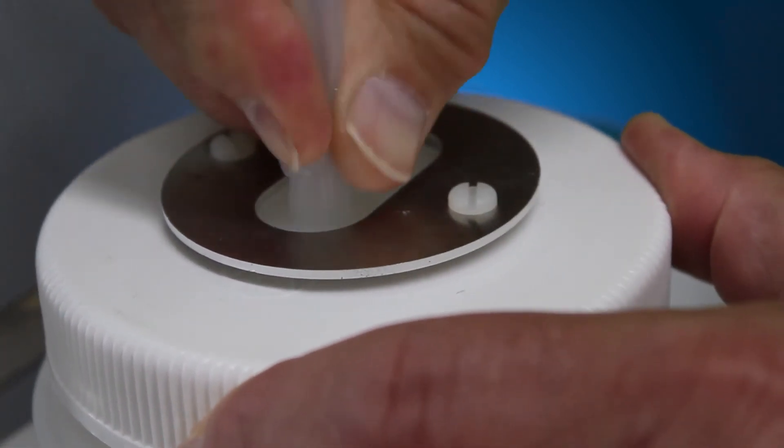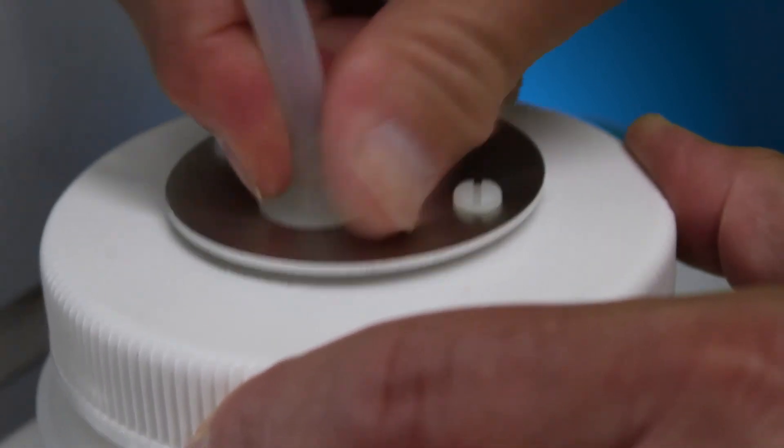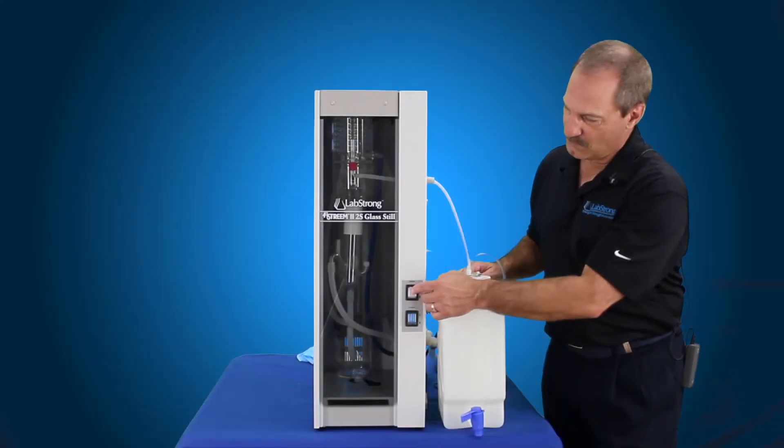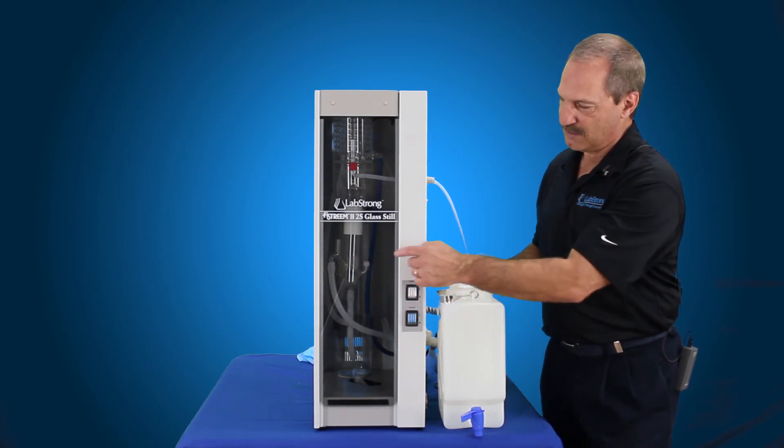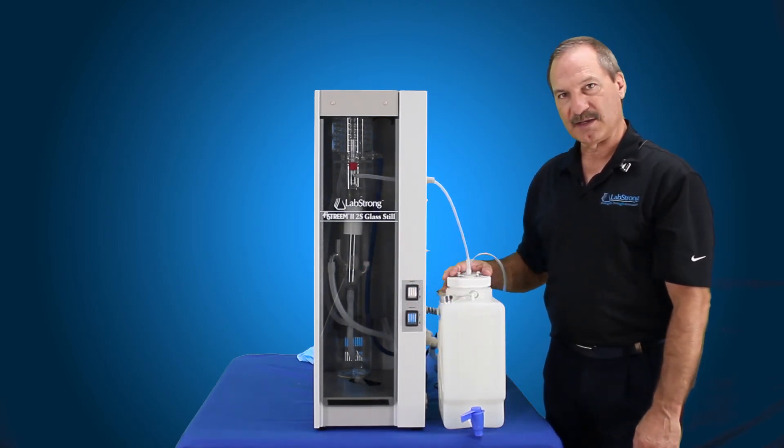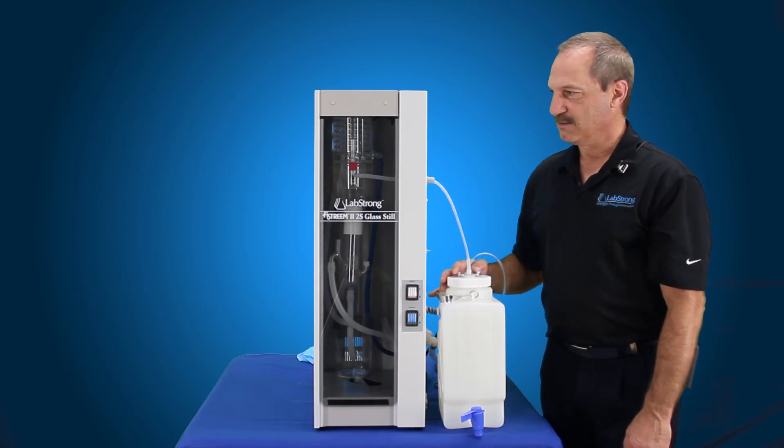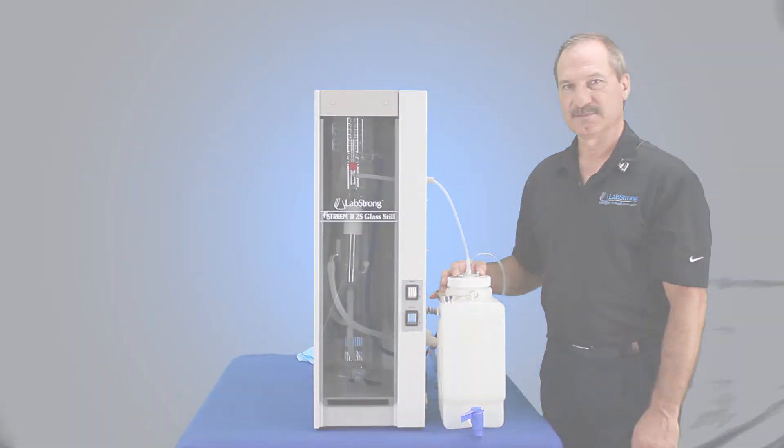Put the power on. When water gets up to the right level on the constant level device, you hit your heater button, turn the heaters on, then your water is going to start filling your tank back up again. And that's how you clean the FireStream 2S still. Thanks for watching.